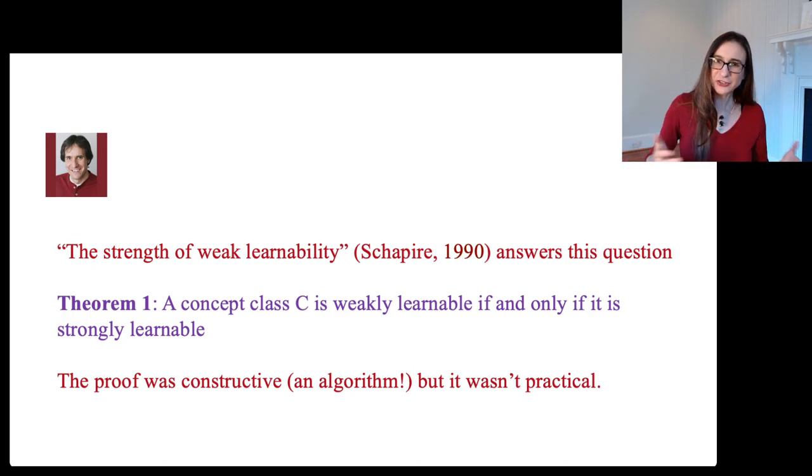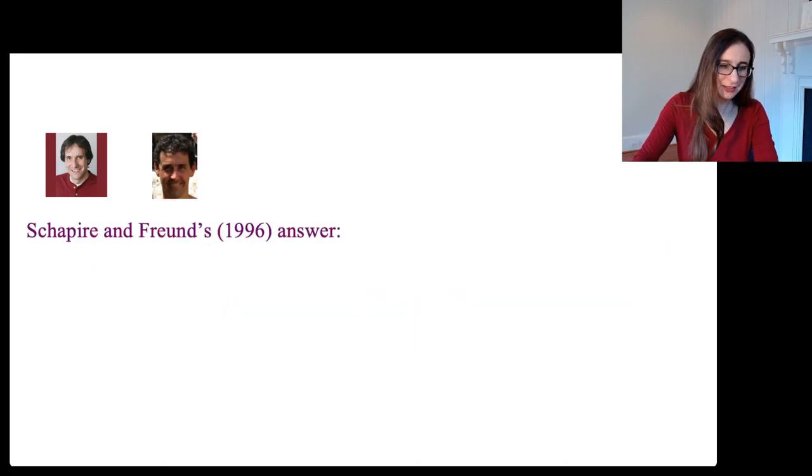And the proof was actually an algorithm that turned a weak learning algorithm into a strong one. But the algorithm that he produced in this paper, although it answered this question, it wasn't actually a practical algorithm. In joint work with Freund in 1996, they answered that question by producing the AdaBoost algorithm, which happens to be the best out of the box machine learning method in existence. AdaBoost is my go-to, you can trust this kind of method.